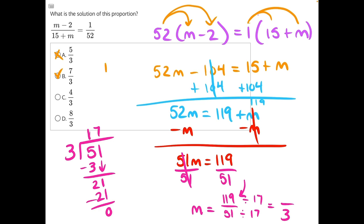If we do 17 times 7, we have 7 times 7 is 49, carry the 4. 7 times 1 is 7, plus 4 is 11. So when we divide 119 by 17, we will get 7. 7 over 3, making answer choice B our correct answer.